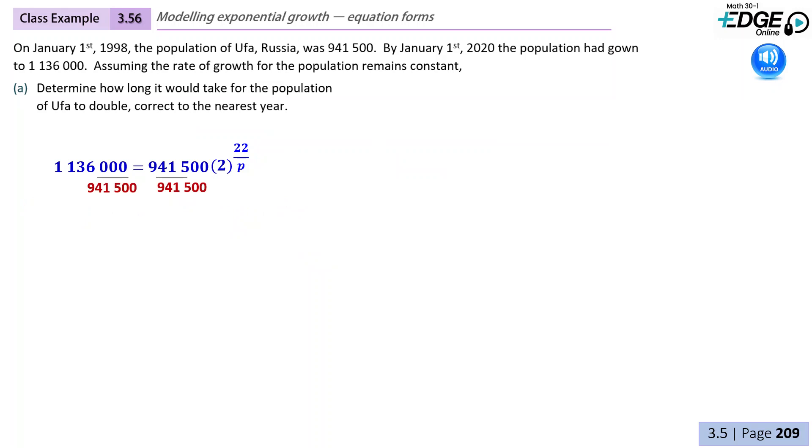So now let's divide both sides by 941,500. And then convert to logarithmic form. Now at this point, we will multiply both sides by P to get it out of the denominator. And then divide everything by that log term.